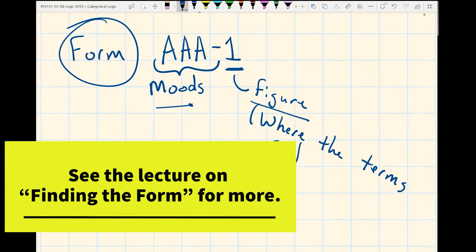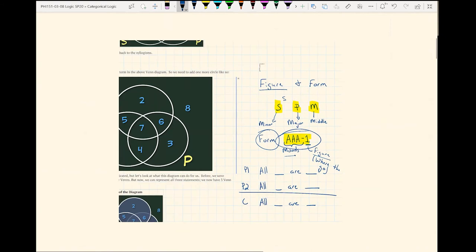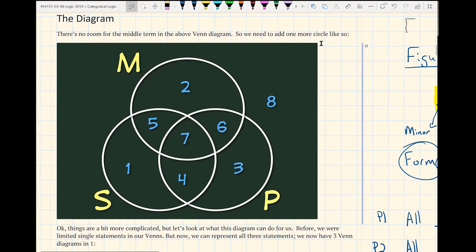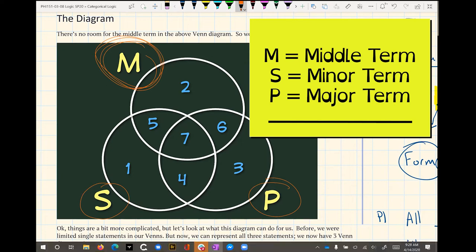We can just use any combination of the moods and any number one through four to represent all possible categorical syllogisms. Let's look at diagrams. So this is the diagram. Notice that we have just a combination of Venns. Let's look at and highlight that we have our subject class, our predicate class, and then we have that middle term. And so that's the new circle that we've added.